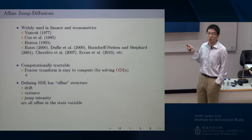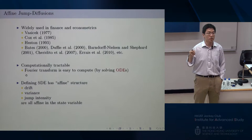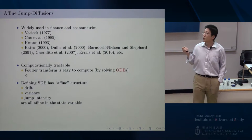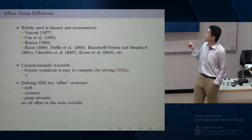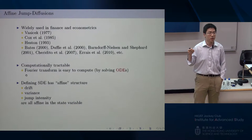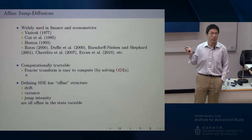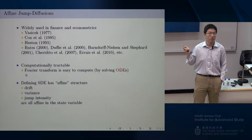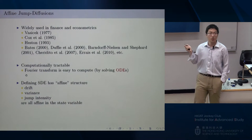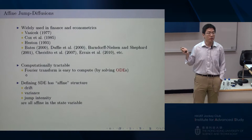Let me now describe what 'affine' means. When you have a stochastic differential equation — in general an SDE with jumps — you have to specify three terms: the drift term, the variance term, and the jump intensity. For this type of process, all three terms are affine, meaning linear, in the state variable.